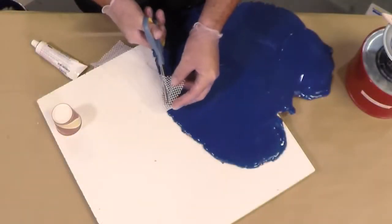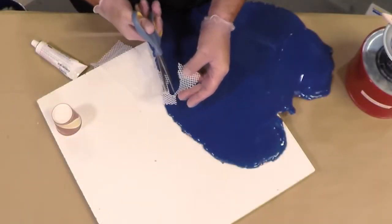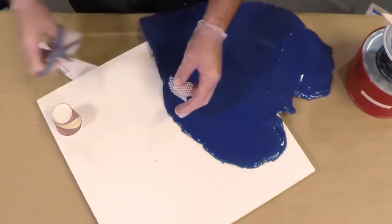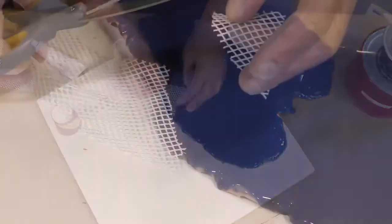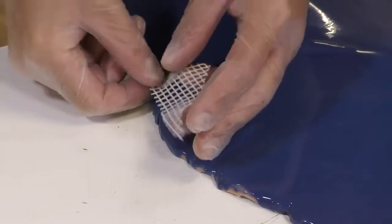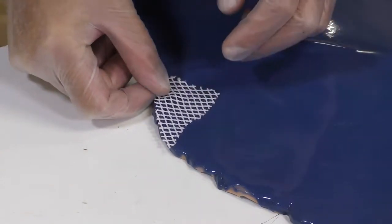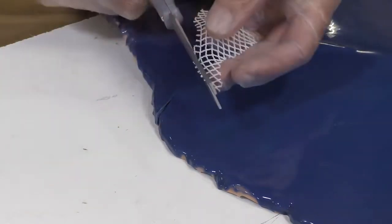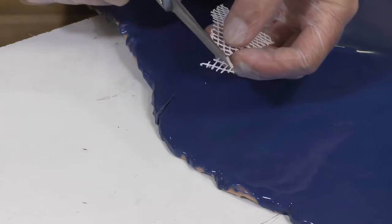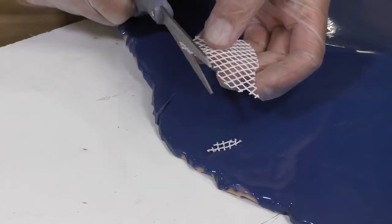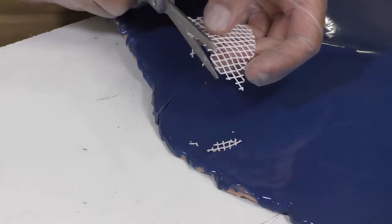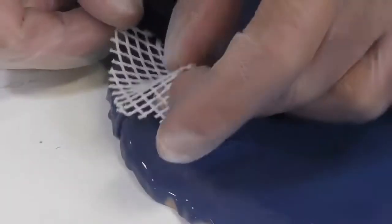Our next step is to cut a patch off the reinforcement cloth that will be used in the repair section. It's a good practice to dry fit the patch before dispensing any of the adhesive. This will prevent us from working against the pot life of the material. The patch should also overlap the tear about one inch in all directions.